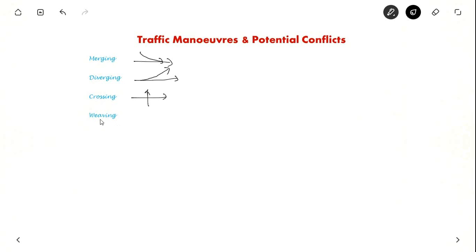And there is something else called weaving. Weaving is a combination of merging and diverging. Here the vehicle merges and diverges. This is weaving.